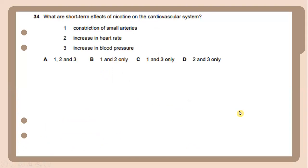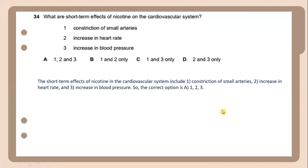What are short-term effects of nicotine on the cardiovascular system? The short-term effects of nicotine on the cardiovascular system include constriction of small arteries, increase in heart rate, and also increase in blood pressure. So the correct option for this question is 1, 2, and 3.